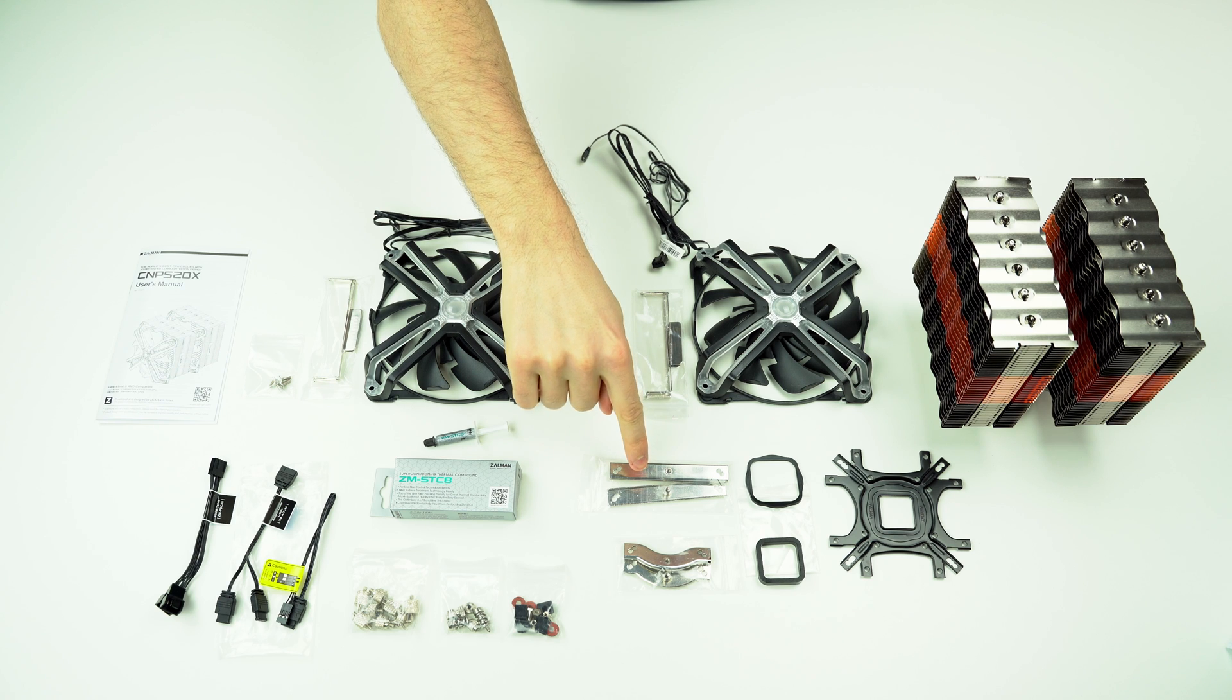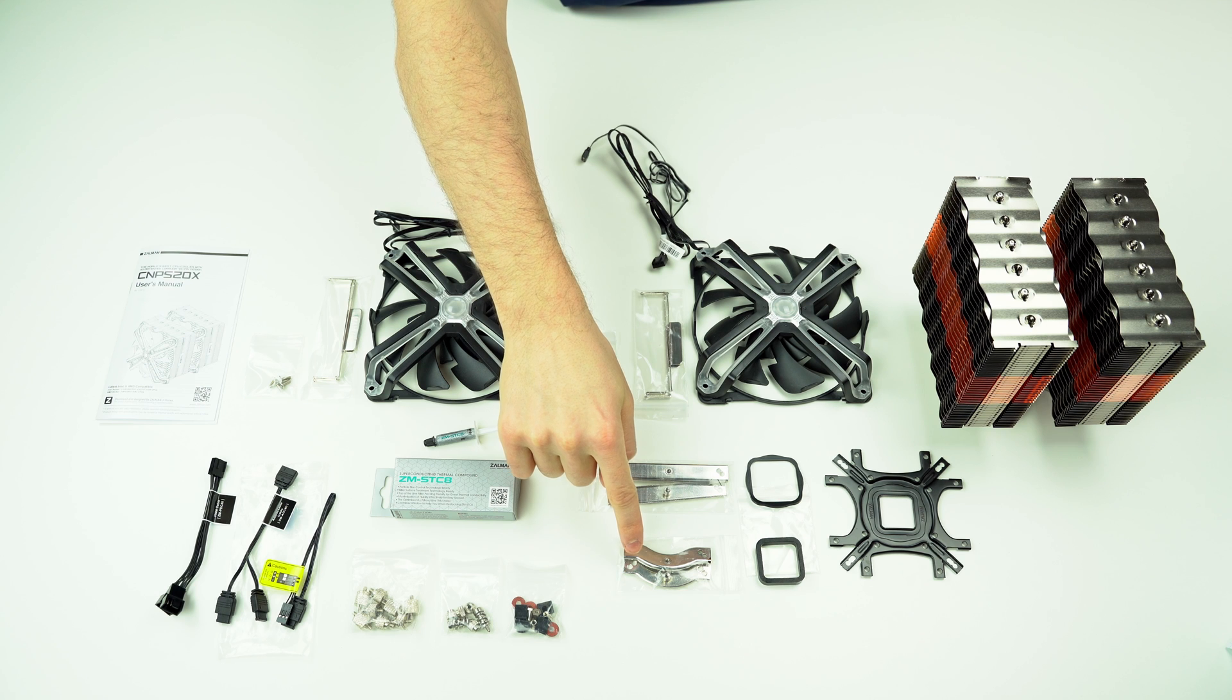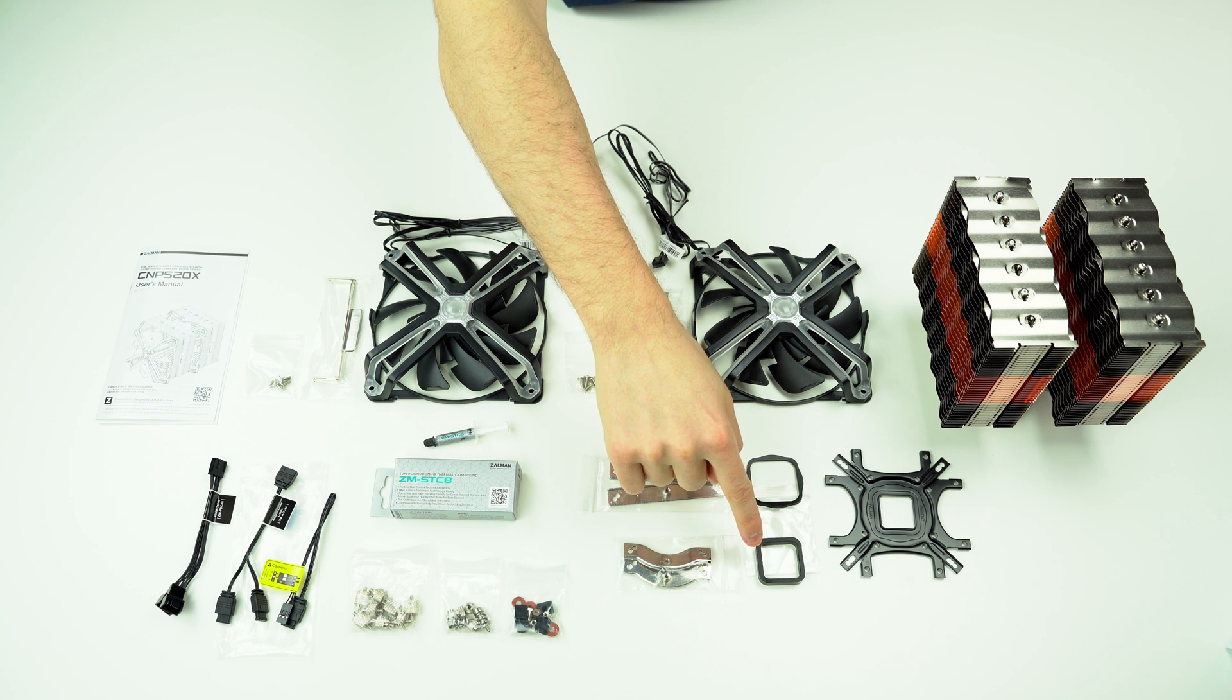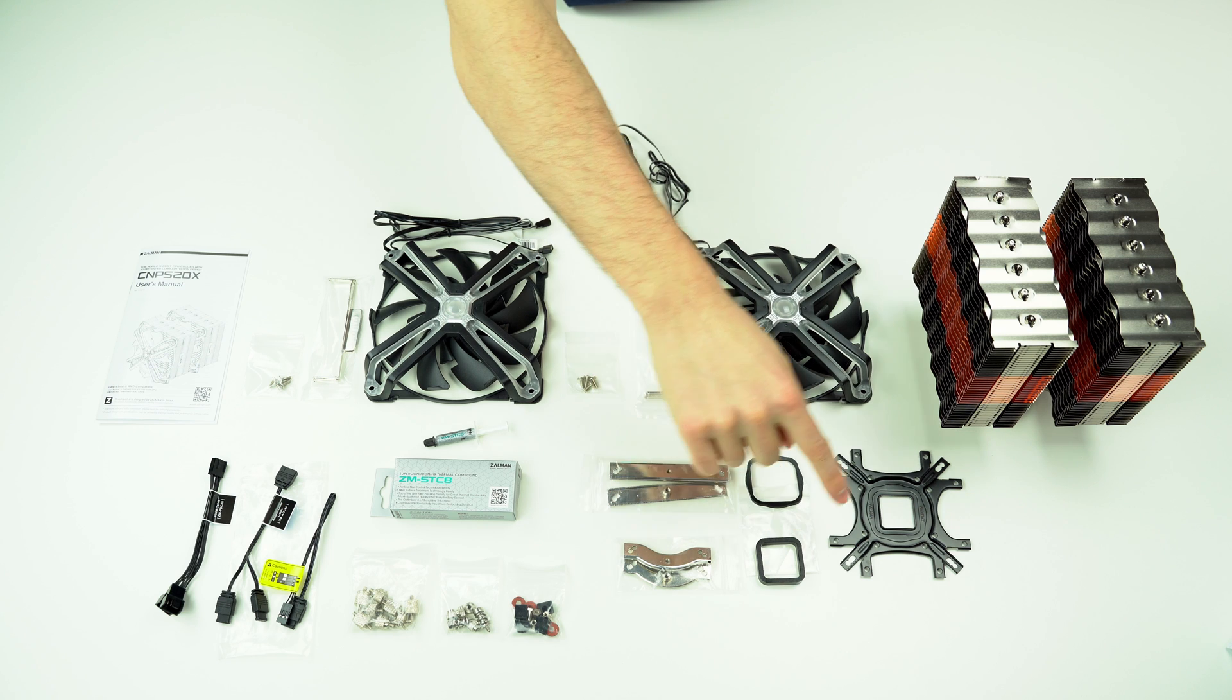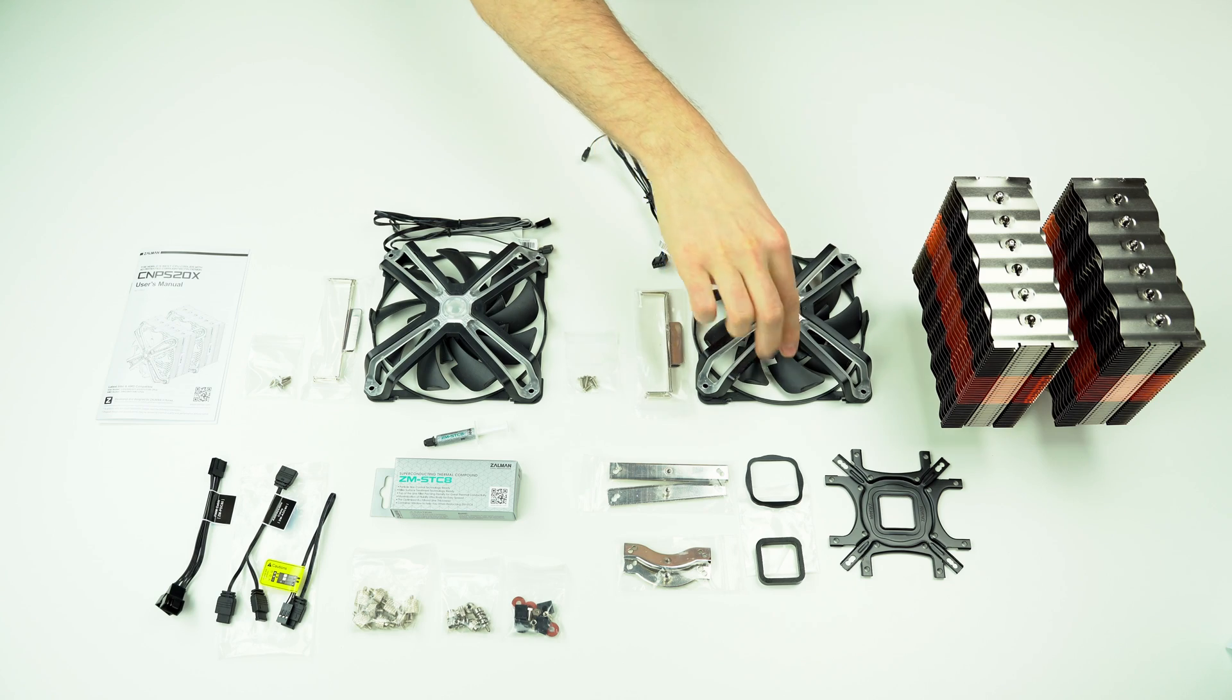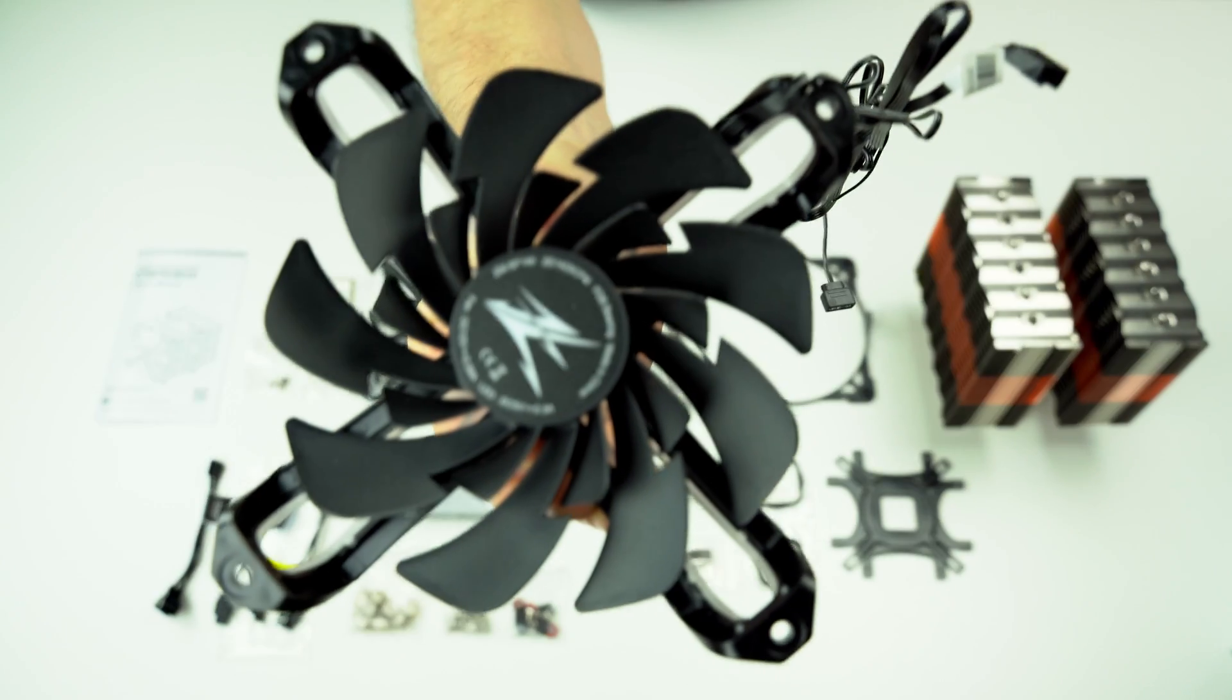Here are two mounting bars for Intel sockets and two mounting bars for AMD sockets. These are loading blocks for Intel and AMD sockets. A backplate. Heatsink. 140mm fan. This one has quite untraditional shape.